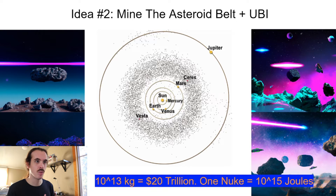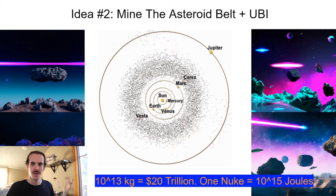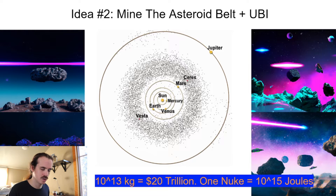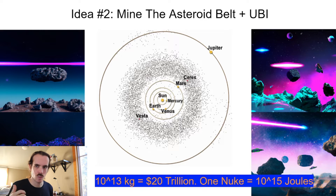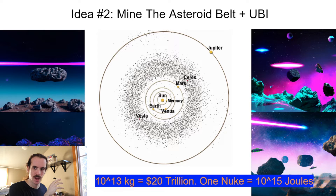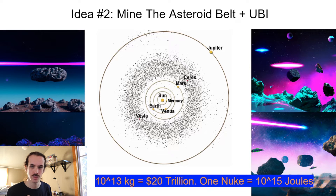Idea number two is the idea to mine the asteroid belt and create a global universal basic income. You may see articles saying asteroid belt mining is impossible with current technology - if you fly to an asteroid, put 100 pounds of it on your ship and fly back, you've spent billions of dollars and got almost nothing. Here's a better idea: fly to an asteroid, attach explosives at various angles, and detonate them one by one. Each subsequent detonation has sensors that calculate which one explodes next to change the trajectory - essentially using explosives to move an asteroid onto Mars or the Moon.